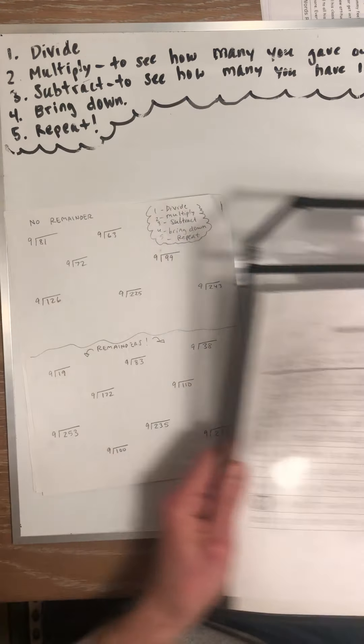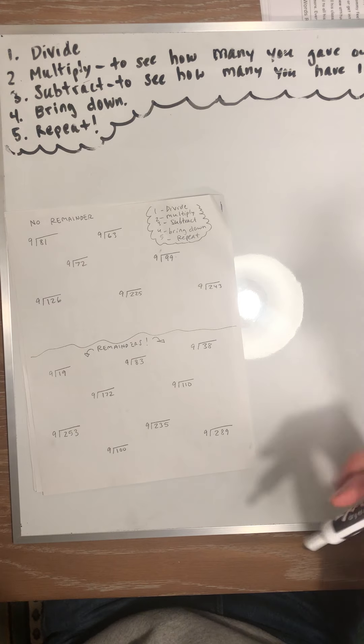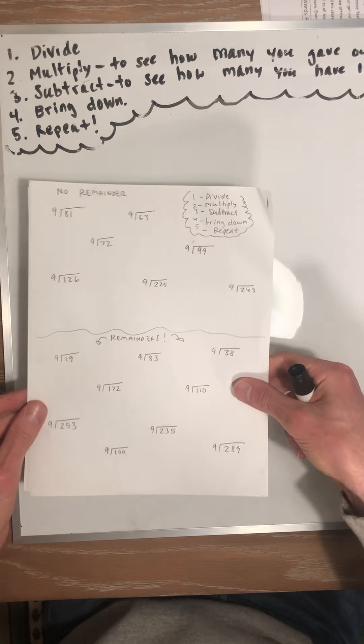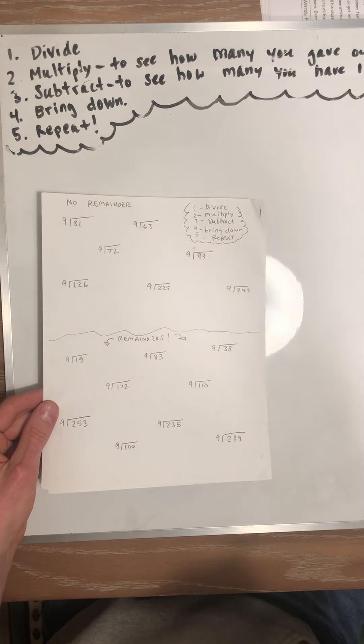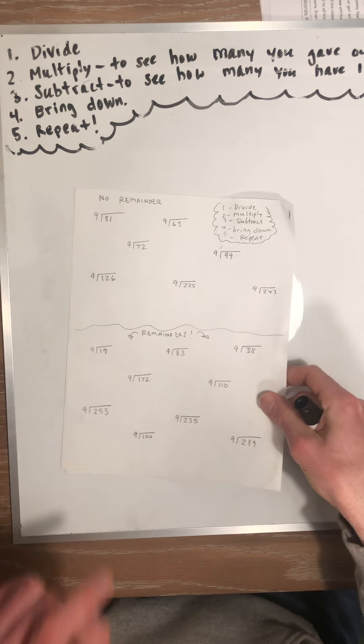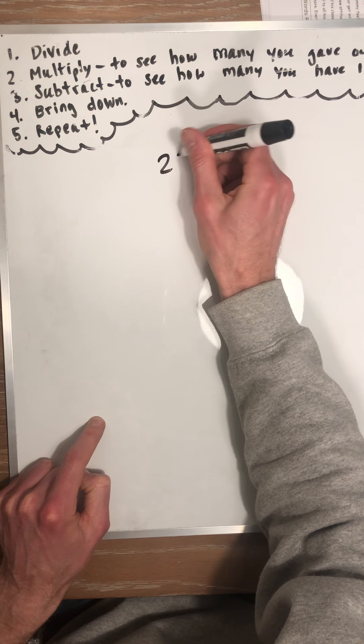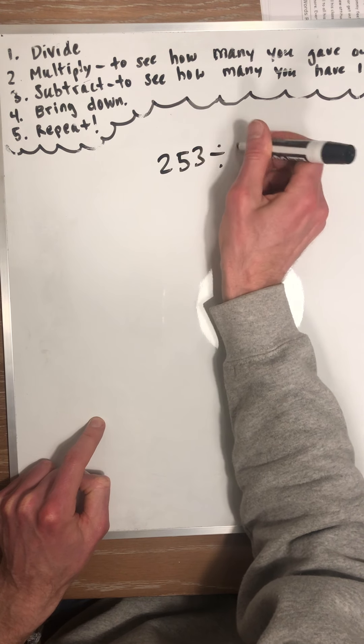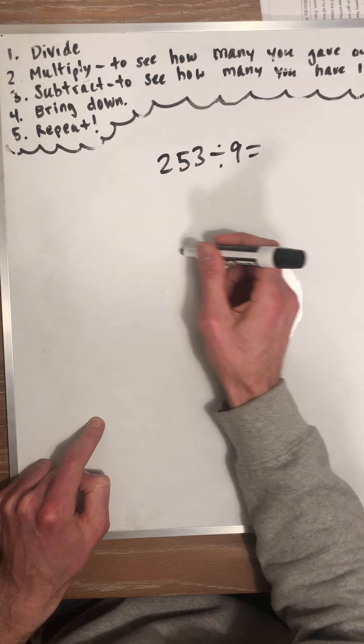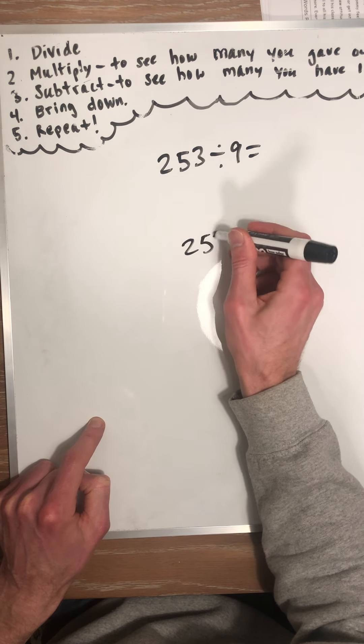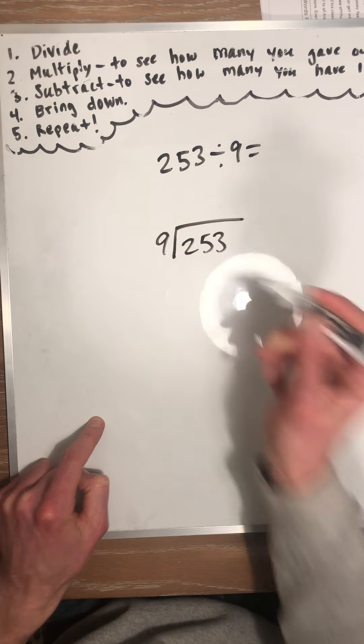Okay, so we're doing the 9s. So I'll just do a problem, just so you can see, even though probably, hopefully by now you don't need too much help. But I'll choose one. I'll do one with the remainder. I'm going to do this one: 253 divided by 9. Okay, 253 divided by 9, or as we know, it can look like this. Same thing.